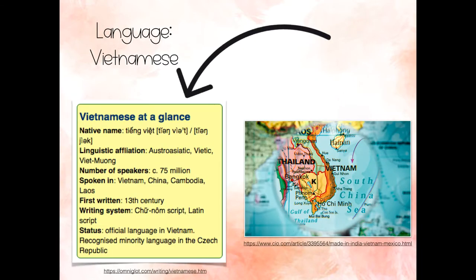The Vietnamese language native name is Tiếng Việt. There are three linguistic affiliations. Currently, there are 75 million people that speak the language, including in Vietnam and in China. It was written in the 13th century. Its written system is formed from a Latin script. It is the official language in Vietnam.